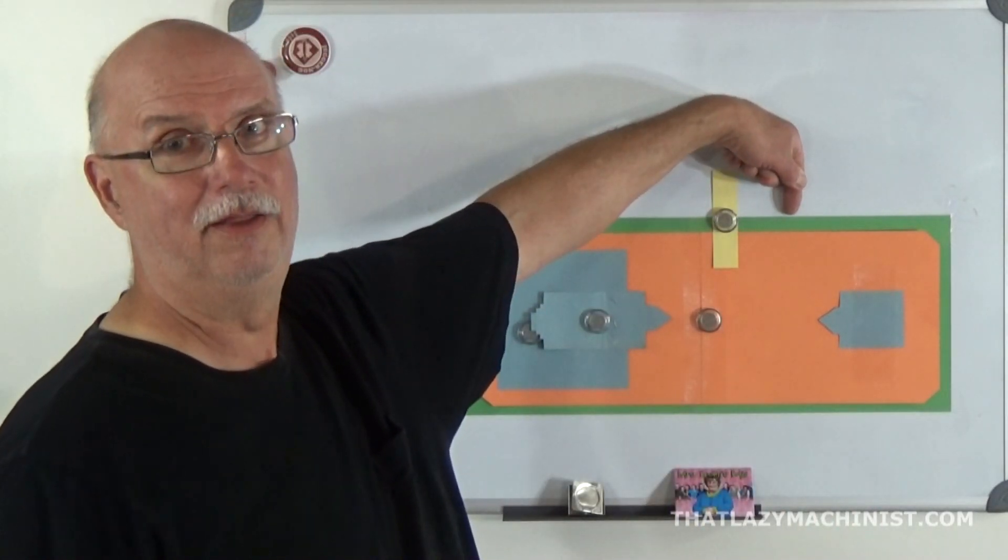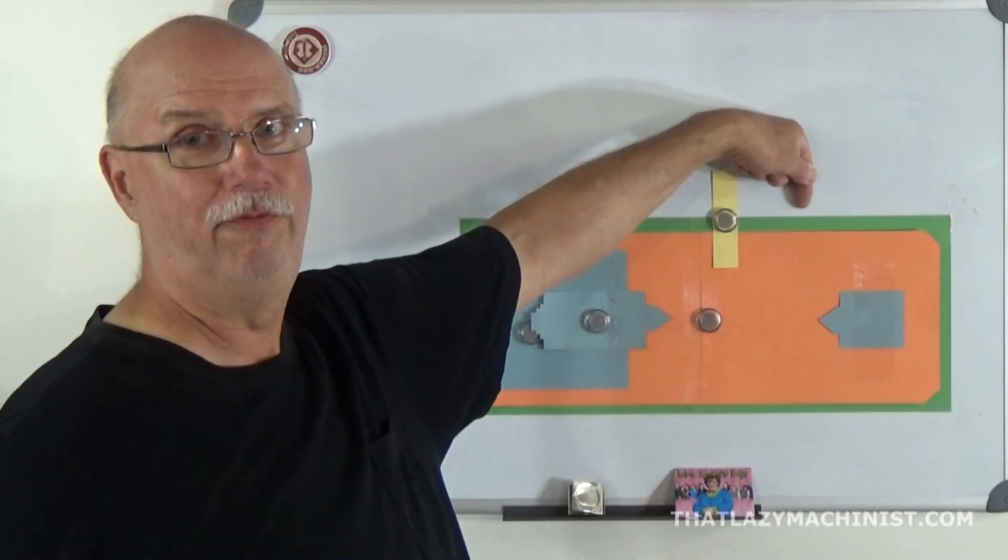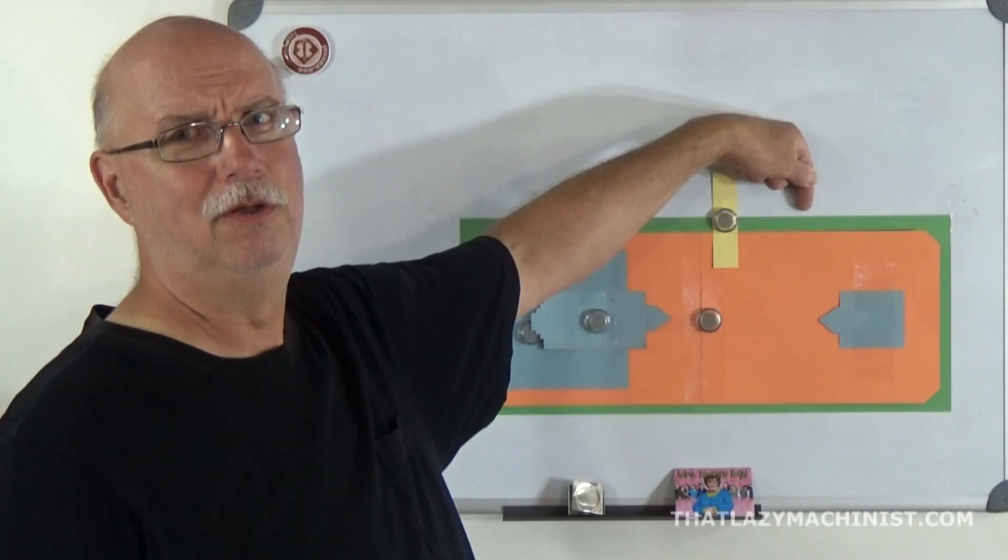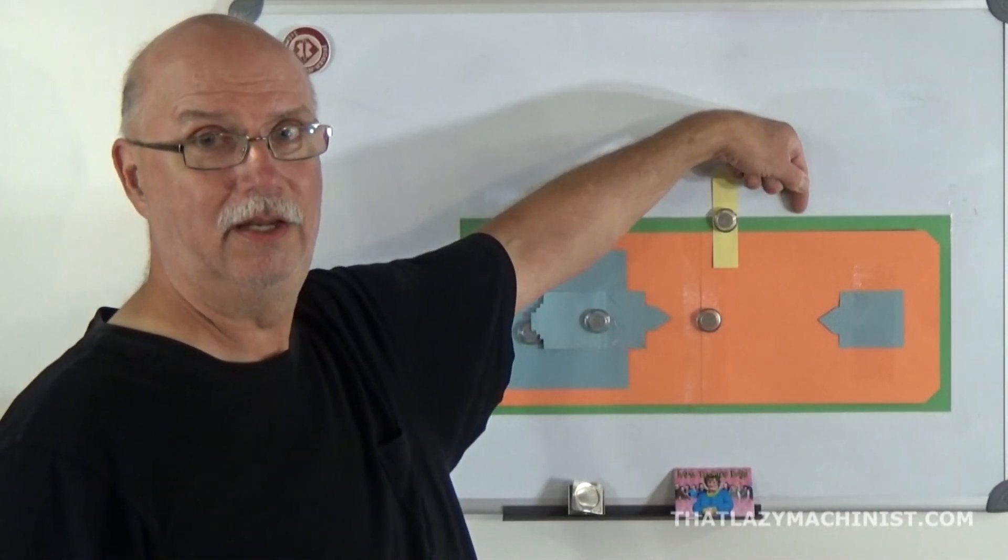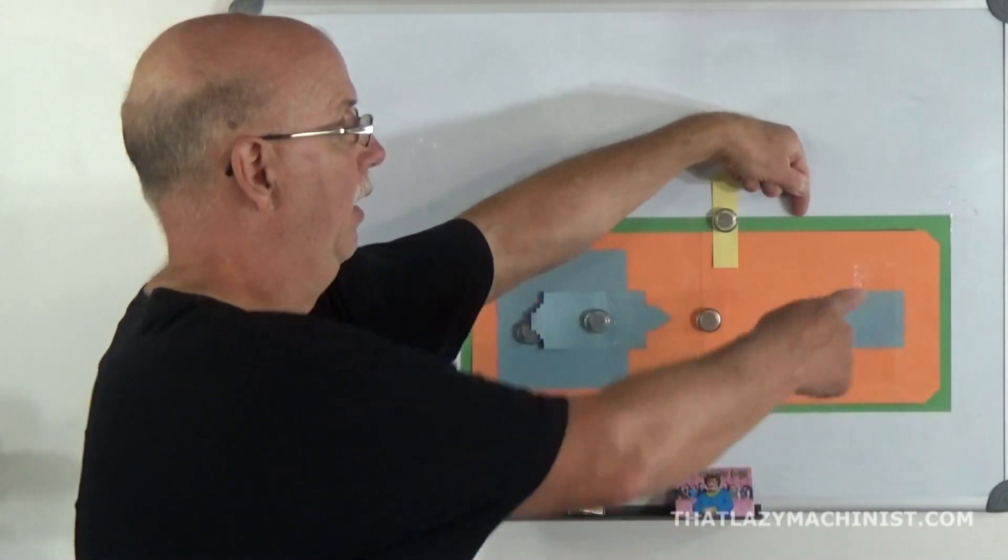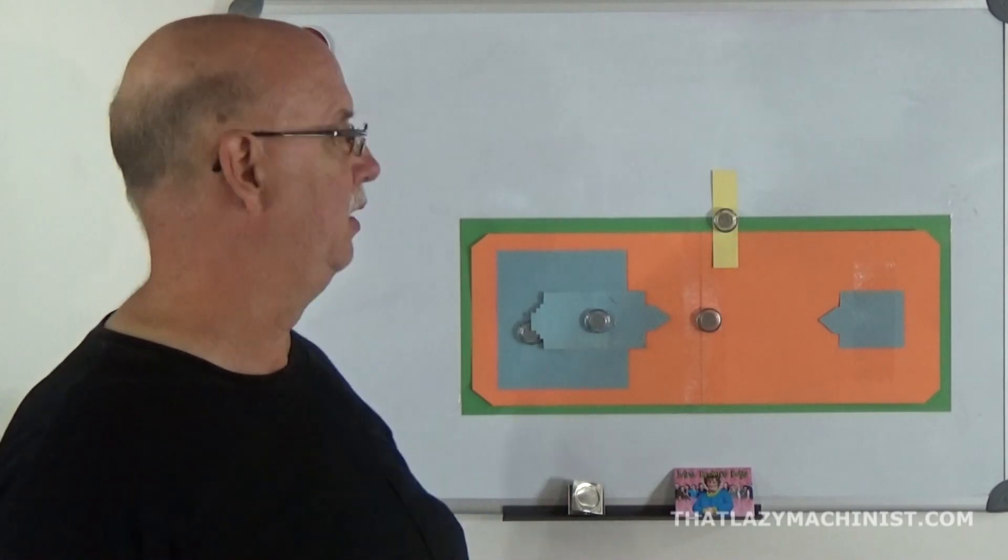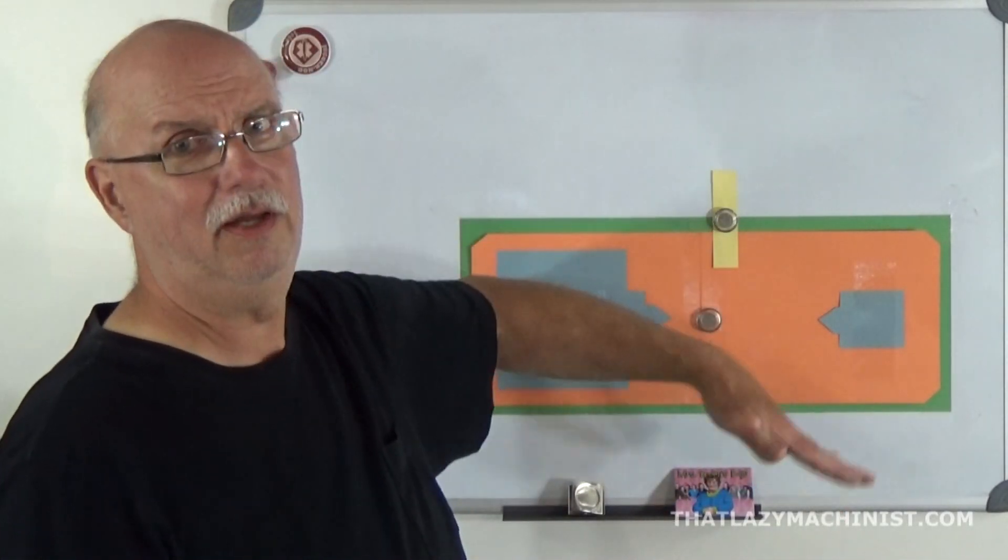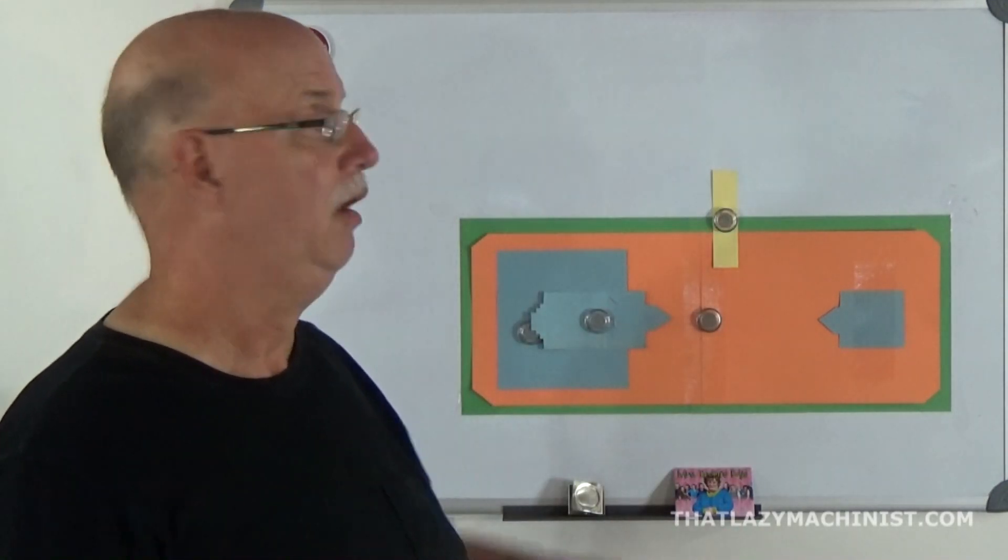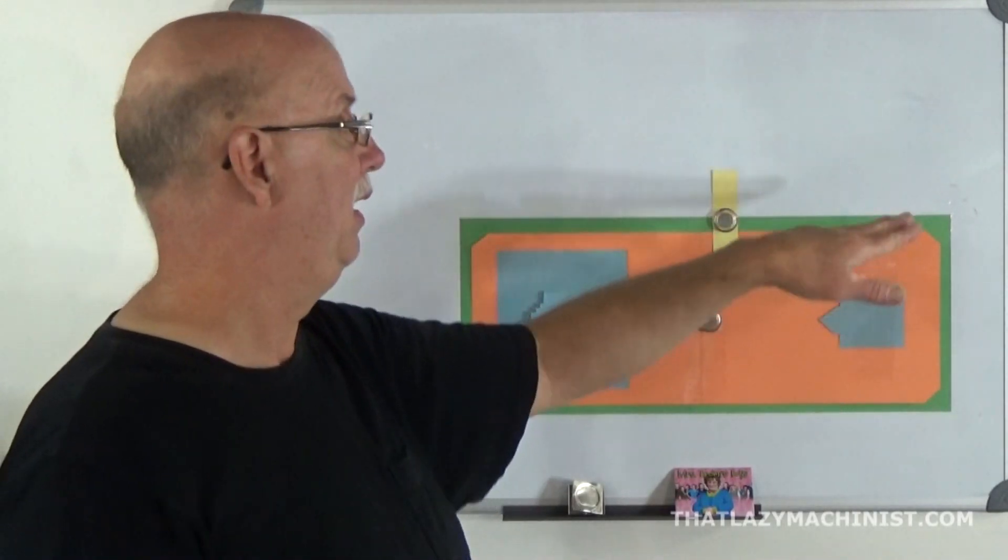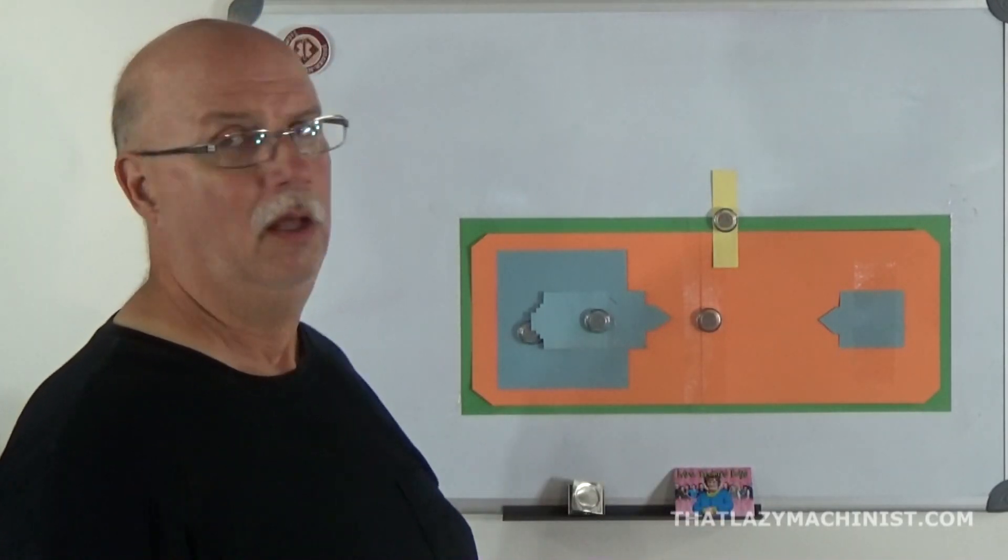How would you check that though? Well you could put an indicator on the edge of the table, on the side of the table I should say, and cycle the table back and forth. And that would give you absolutely no information. Don't do that. You can't do that. If you put an indicator on the side of the lower table here and move the table back and forth, the indicator will always be in the same position relative to the table, whether it was crooked, straight, or crooked the other way.